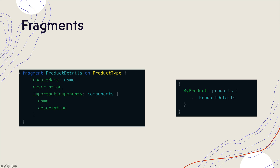Since we are working with the product type, we specify it, and then within that type we have different fields like product name, description, components and so on. We pass in all those details and then call that particular fragment within the query — as you can see on the right-hand side — where we have an alias like 'my product' and inside it we use the spread operator (dot dot dot) to call the fragment 'product details' defined on the left-hand side. We'll see how it actually works in an example.